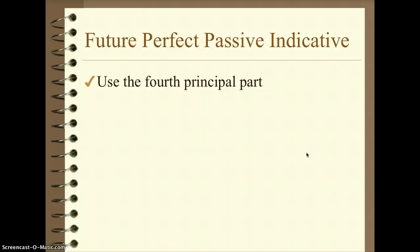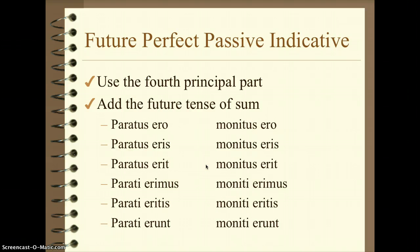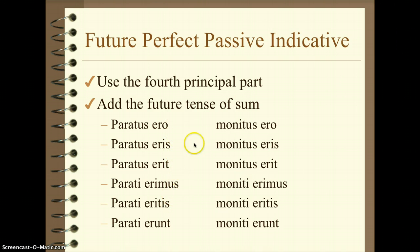Now for future perfect — the last tense and the least used of the perfect system. We still start with the fourth principal part; nothing changes for the stem, and nothing changes as far as the number of words. The other word is going to use: ero, eris, erit, erimus, eritis, erunt. Be careful with erunt. You'll hopefully notice that most of these are identical to the endings used for future perfect active from the last video.